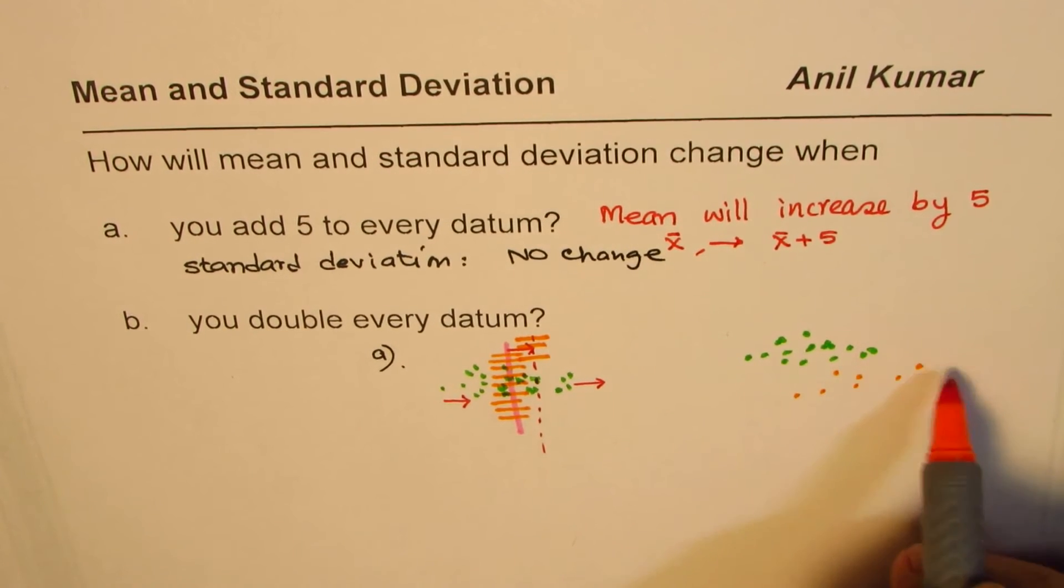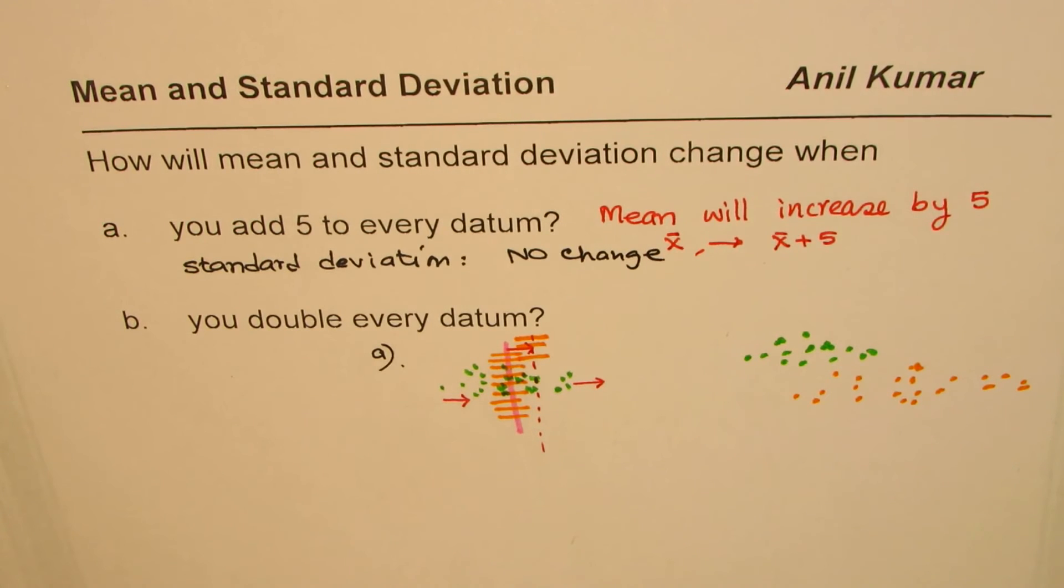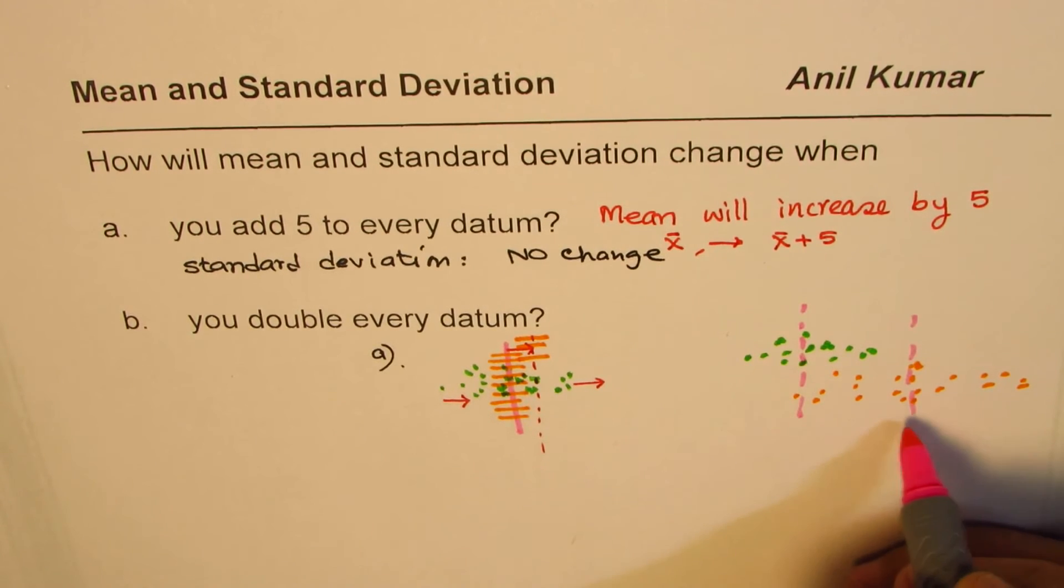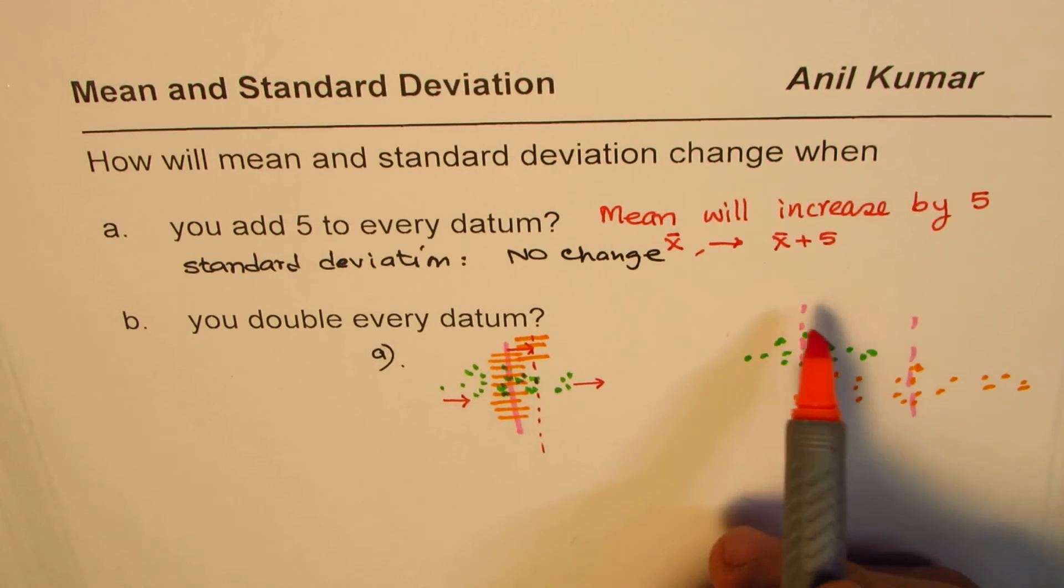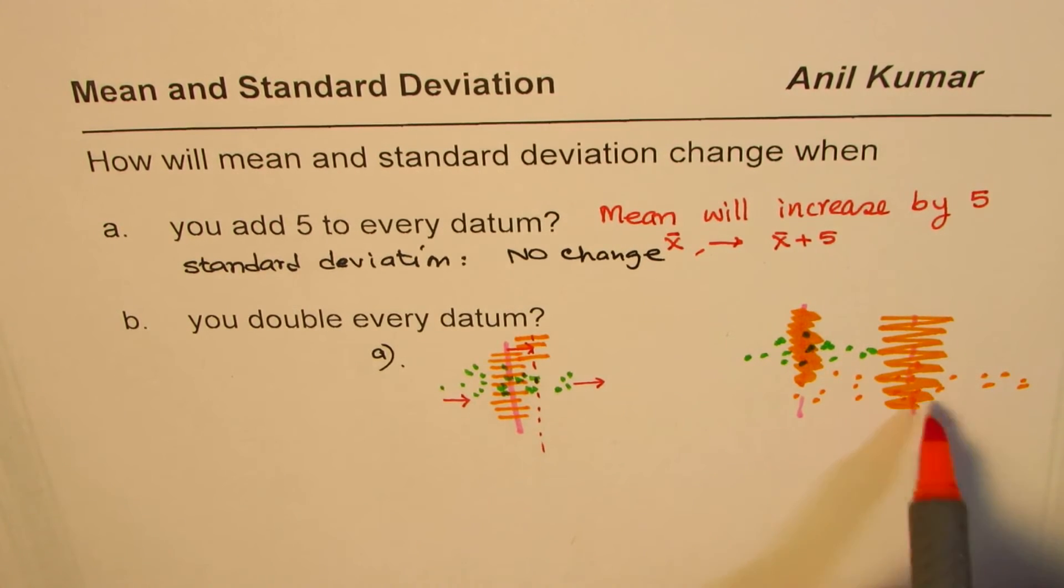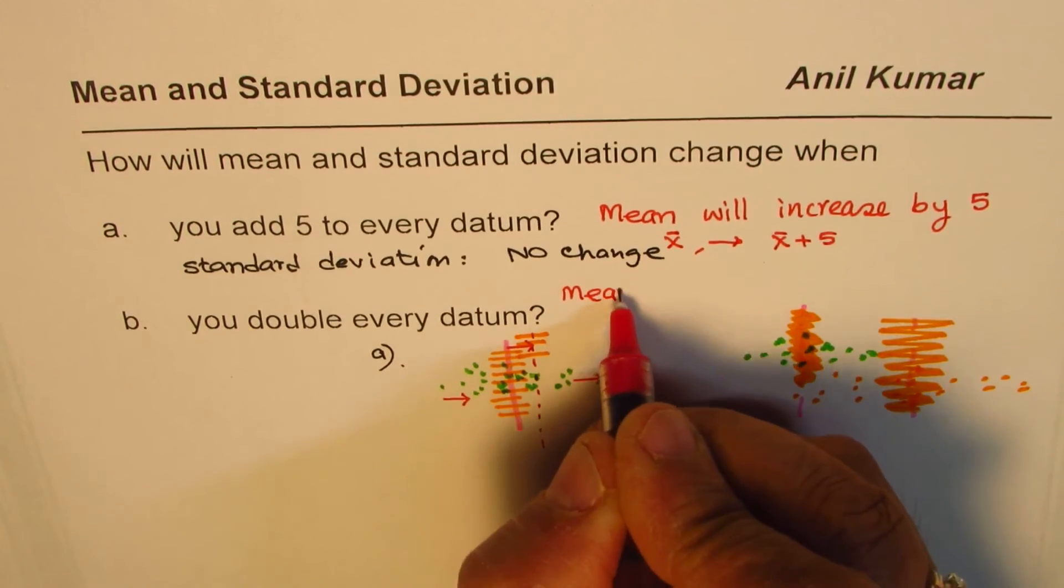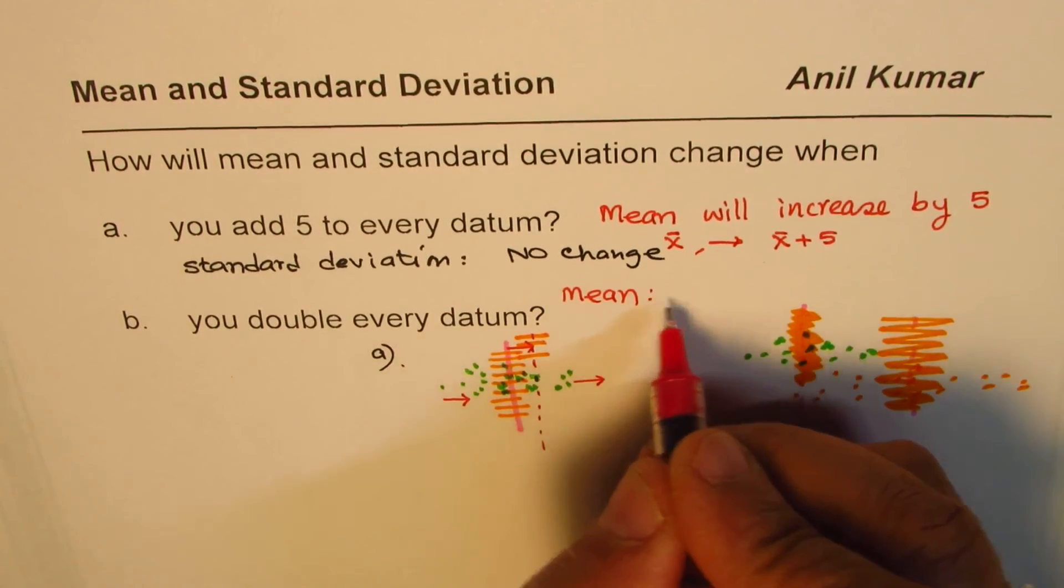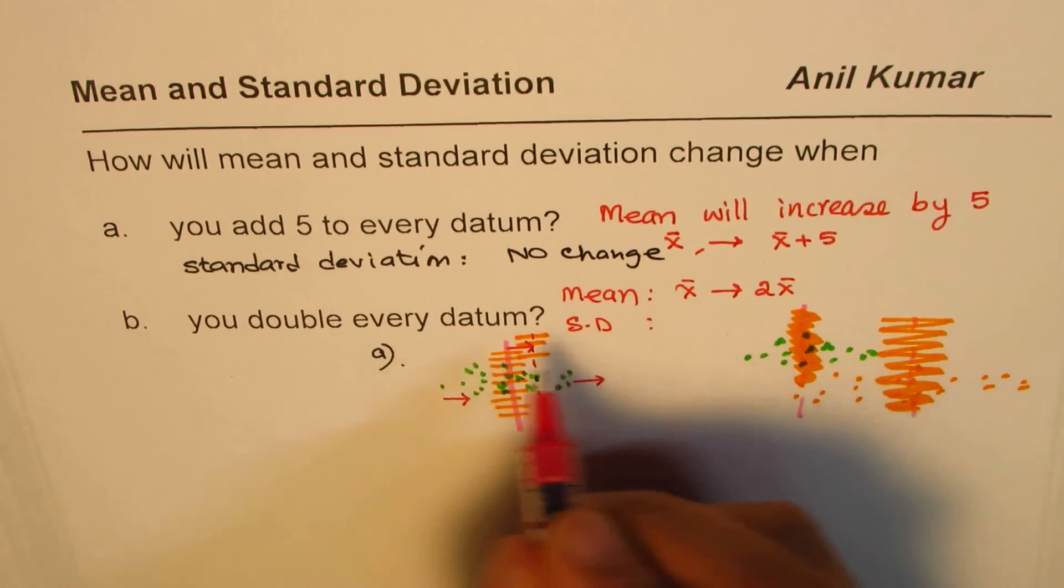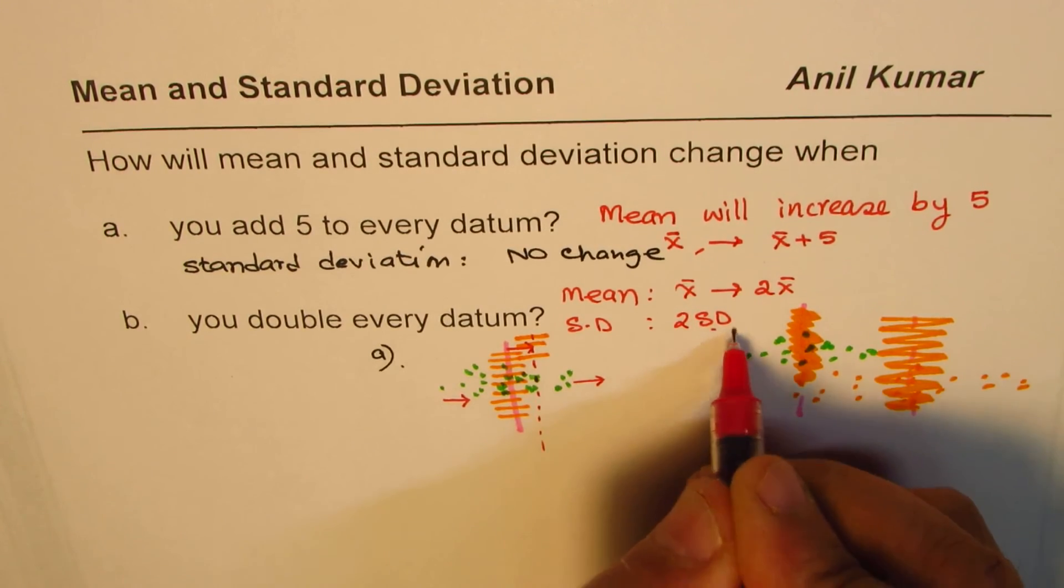Do you see that the range will get multiplied by 2? So clearly, if the mean was earlier at this point, it will be at twice the value. And if the deviation was kind of like this, it will now be twice. So in this particular case, what really happens is that mean is doubled. So when you double every datum, the mean will change and become twice the mean, and standard deviation will become also twice the normal standard deviation or the earlier standard deviation.